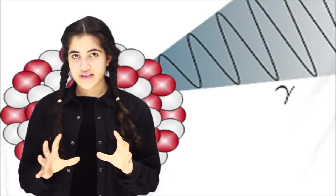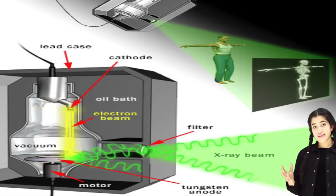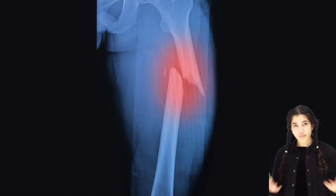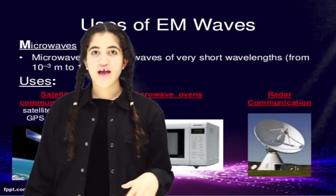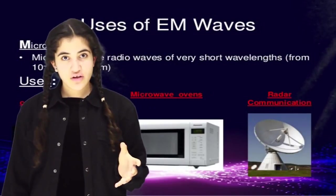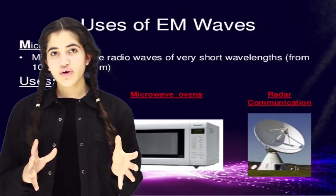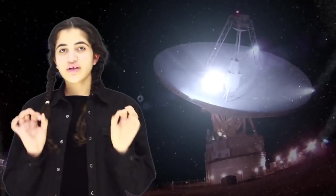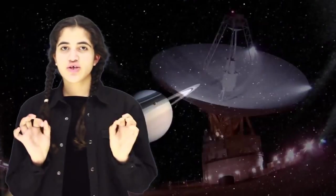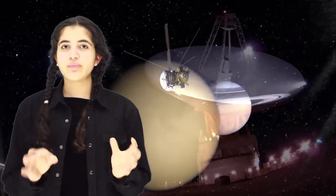Let's look at the different uses of electromagnetic waves. Gamma rays, which have high frequency and short wavelength, can be used to detect and treat cancer. X-rays can show broken bones. Microwaves and radio waves are used for cellular phones, microwave ovens, radio communication, and space communication.